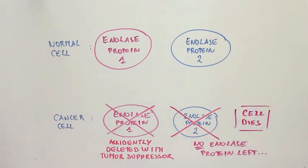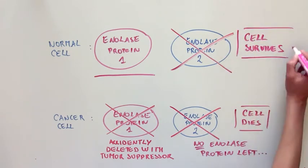Now, let's look at normal cells. These normal cells still have two anylase proteins, so blocking one anylase protein will leave one anylase protein, which means the cell will be fine.